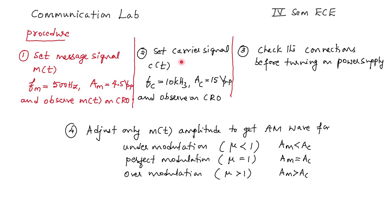In the second step, set the carrier signal — sinusoidal in nature — with a frequency of 10 kilohertz and a carrier amplitude of approximately 15 volts peak-to-peak. Observe on the CRO and note it down in your observation. Before applying power supply to the circuit, check the connections and turn on.